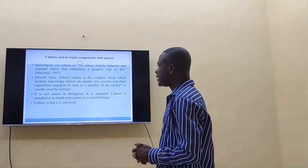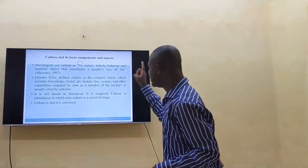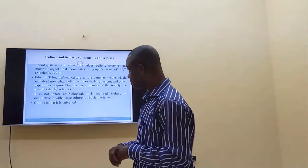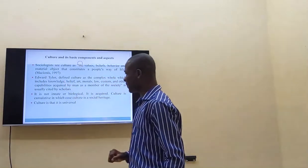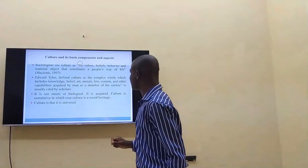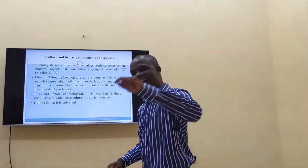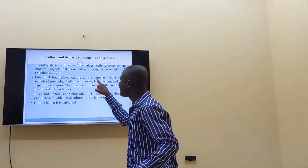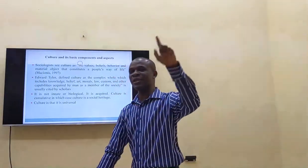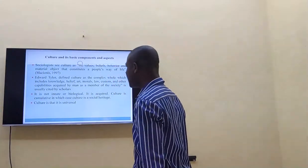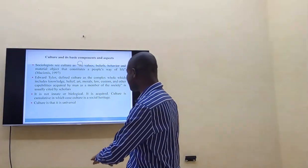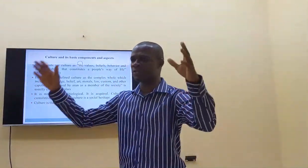Sociologists see culture as the values, beliefs, behavior, and material objects that constitute a people's way of life. Edward Tylor defines culture as that complex whole which includes knowledge, belief, arts, morals, customs, and other capabilities acquired by man as a member of society. This definition by Edward Tylor is widely and usually cited by scholars. Culture is not innate or biological; it is not a heritage one is born with — it is acquired. Culture is a social heritage and it is universal; every known society is cultural.